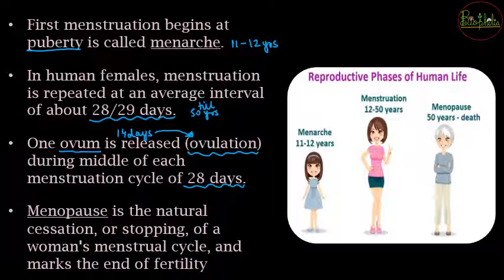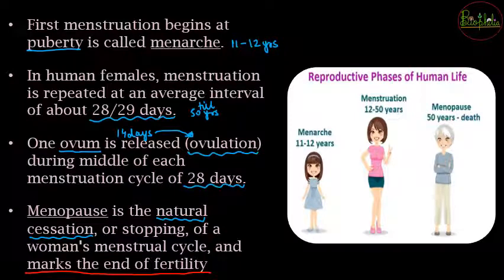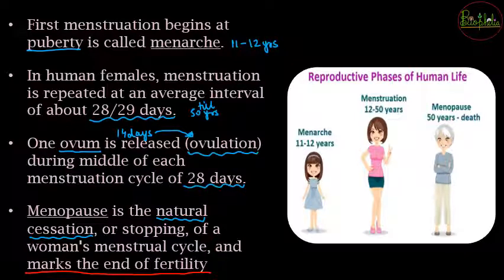After 50 years, the menstrual cycle stops — this is natural cessation of the menstrual cycle, marking the end of fertility. After that, the female gamete (ovum) is no longer released, ovulation stops, and there is no endometrial lining shedding. This natural cessation is called menopause, occurring around after 50 years of age.